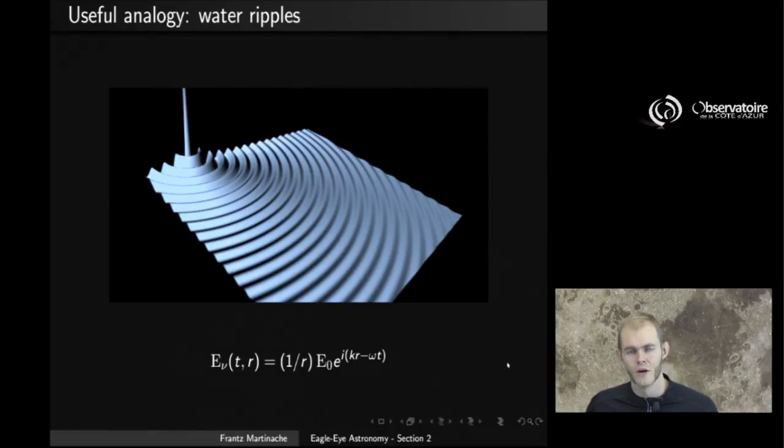One way to think about it is to compare, to imagine ripples at the surface of water. And here I made a little picture based on a simulation that shows what the impact would be of a vibration caused by a source located somewhere here at the surface of water, simply exciting locally the surface of the water and generating ripples that propagate from the origin down to the extremities of the surface covered by the water.